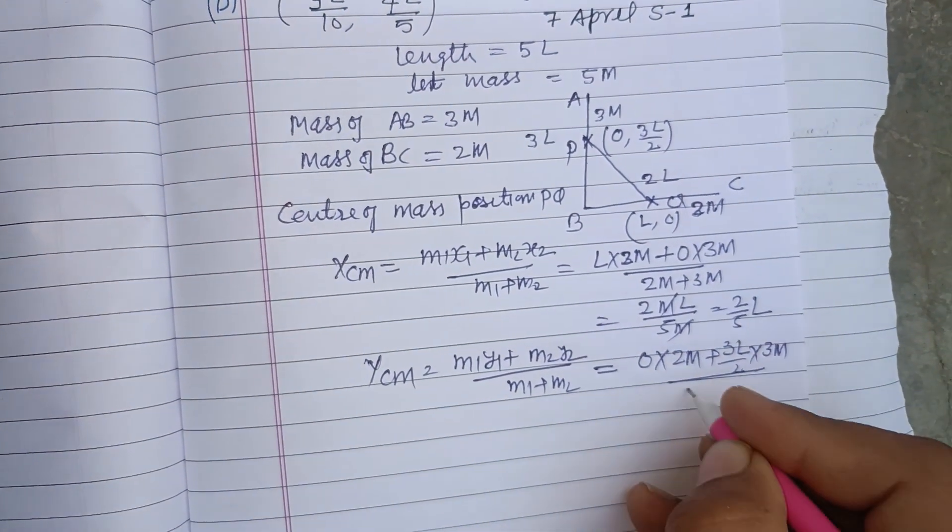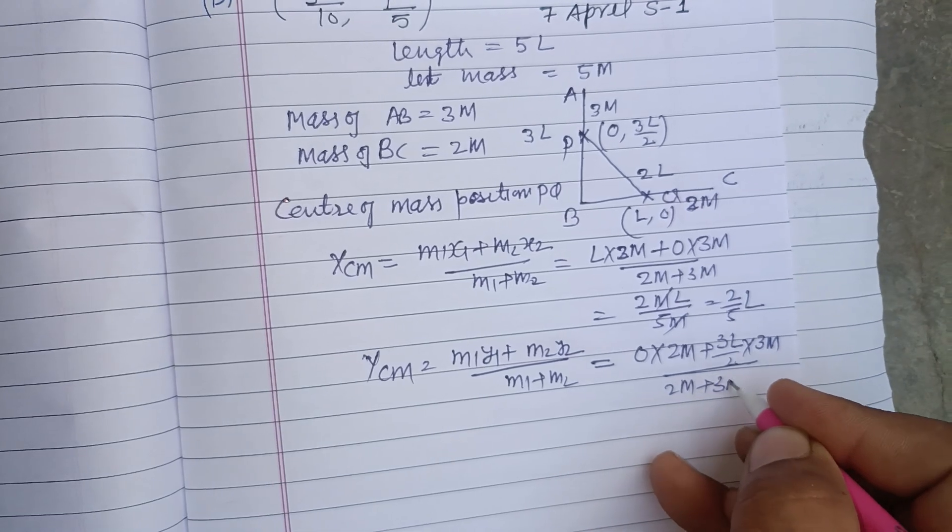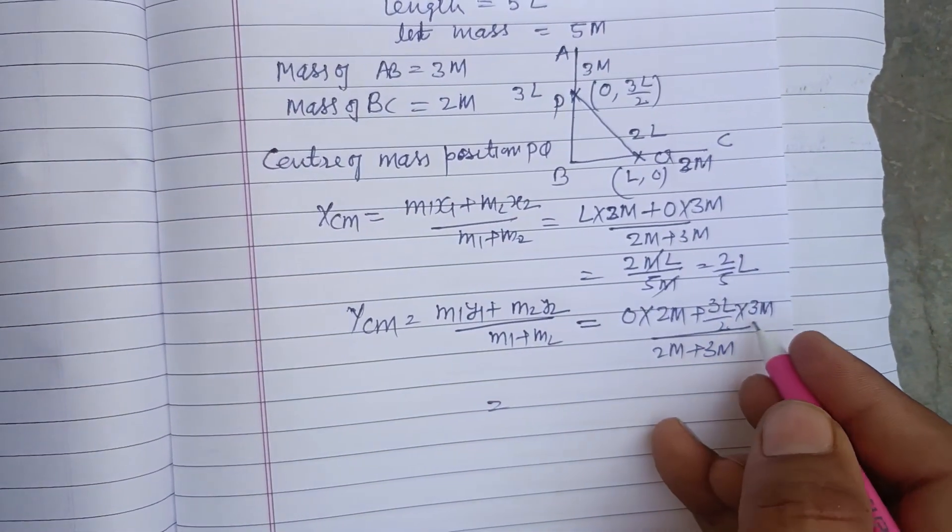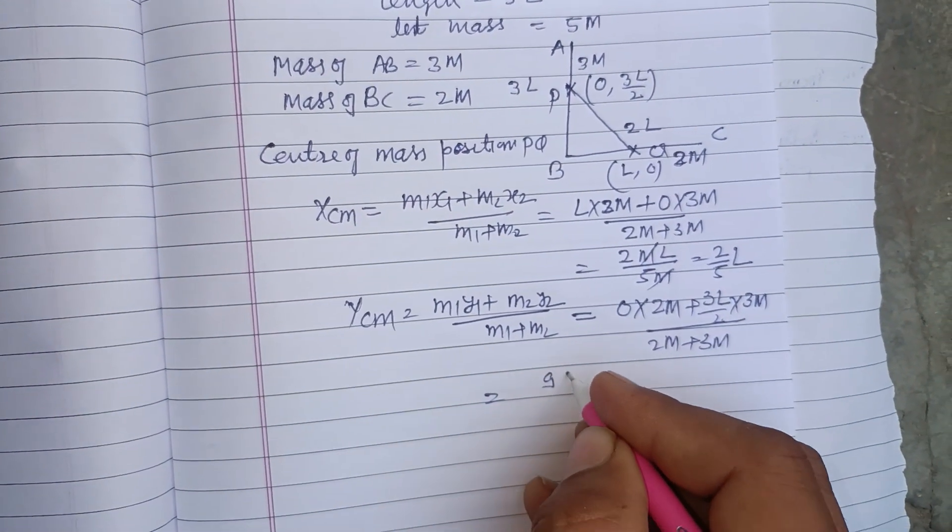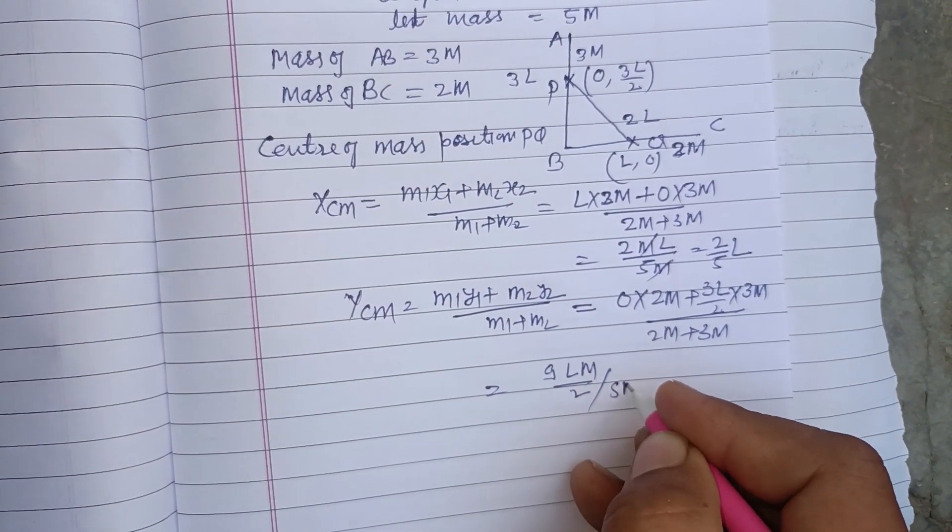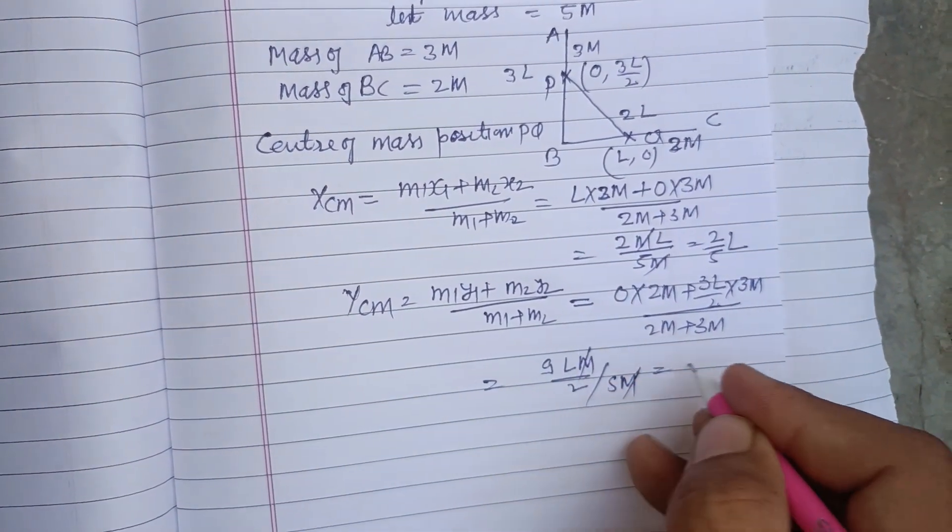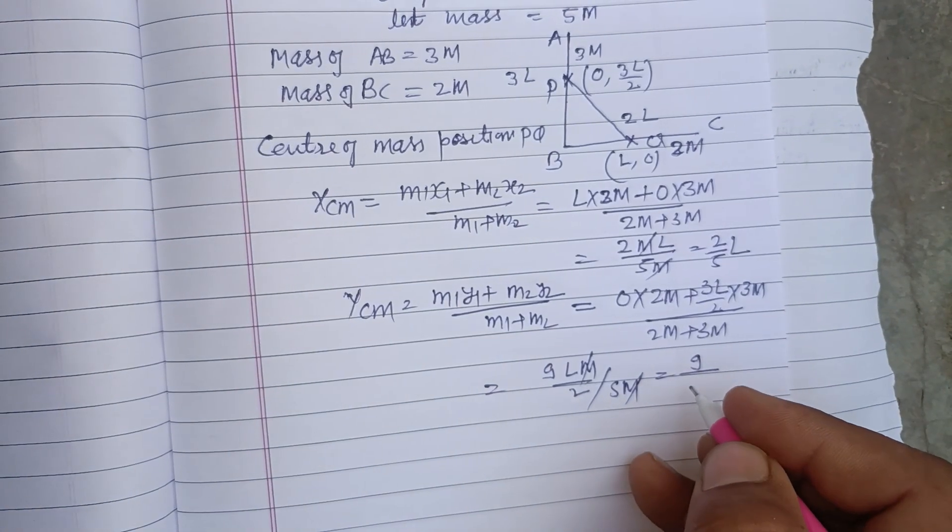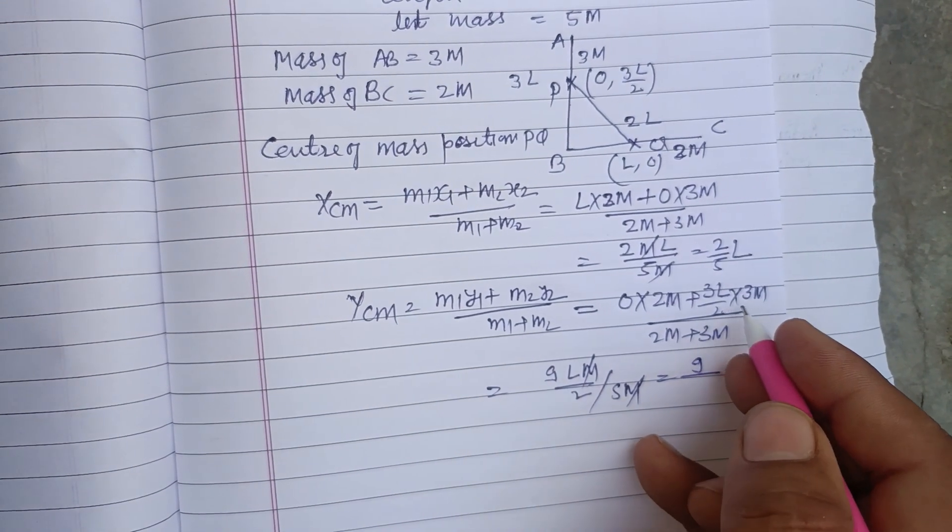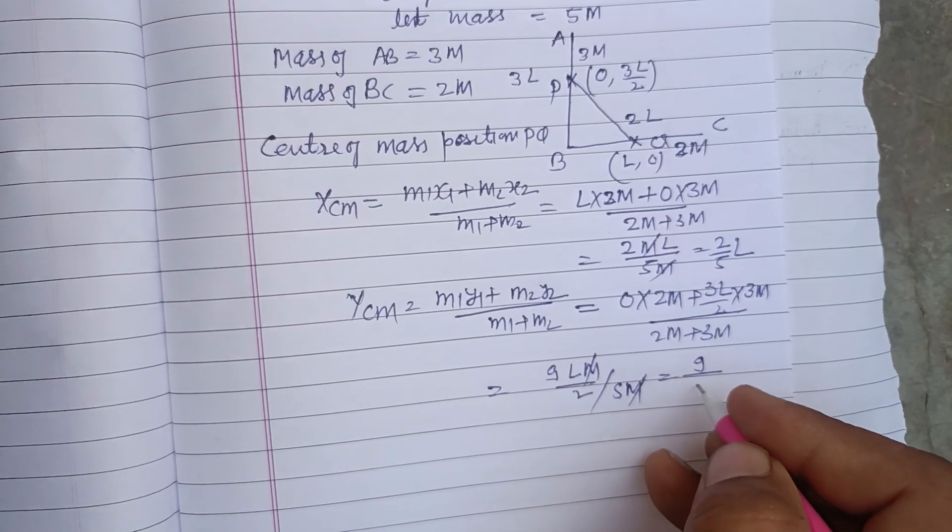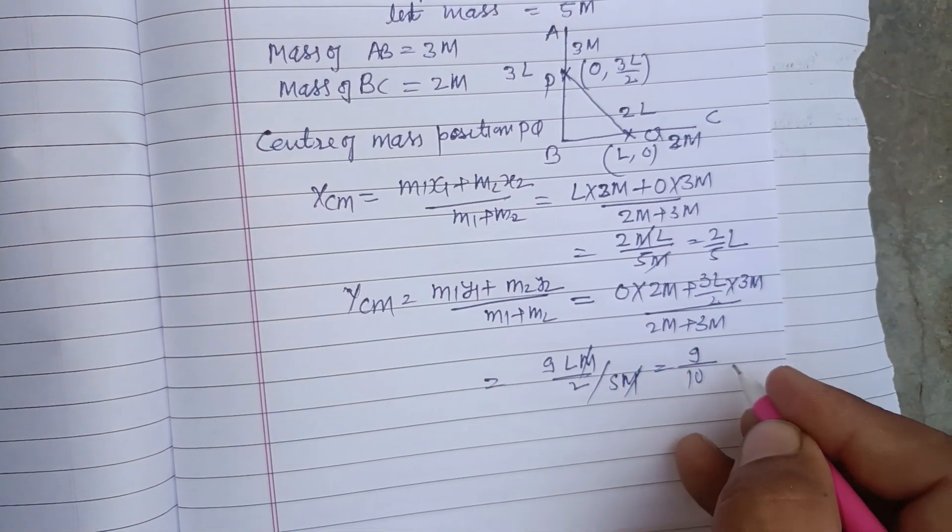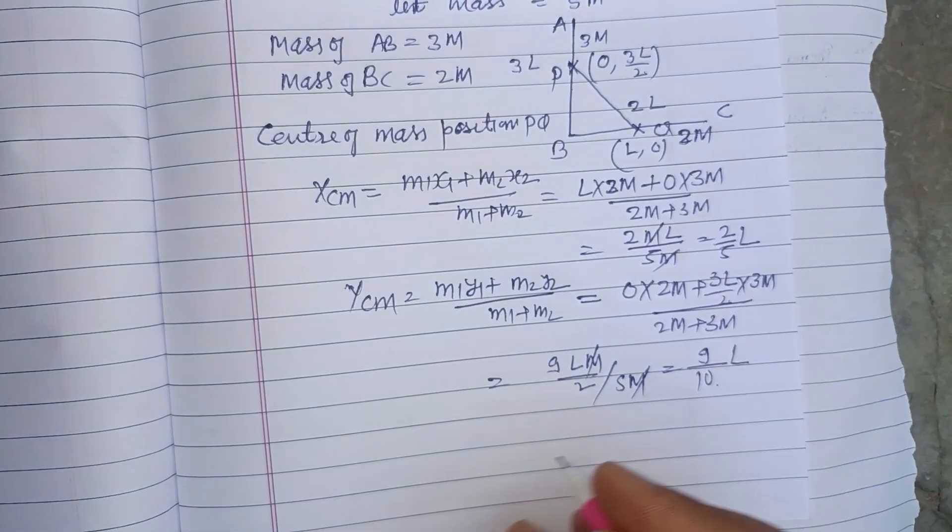Upon 2M plus 3M, and that is 3 times 3 is here 9L times M upon 2 upon 5M. So M, M cancel, 9 upon 5 times 2, 9 upon 10L.